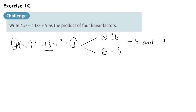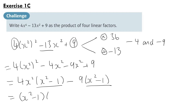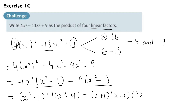So we split -13x² into -4x² and -9x², giving us (2x²)² - 4x² - 9x² + 9. That equals 2x²(x² - 1) - 9(x² - 1). We've got a common factor of (x² - 1) which we can take out, leaving us with (x² - 1)(2x² - 9) — wait — (4x² - 9). We're not quite there yet; we need four linear factors. Both brackets are differences of two squares, so we can write this as (x + 1)(x - 1)(2x + 3)(2x - 3), and those are our four linear factors.